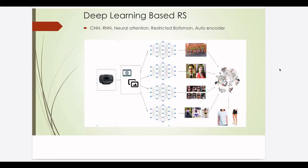In the previous slide, we saw how multi-layer perceptrons can be used as recommendation systems. Just like multi-layer perceptrons, bigger deep learning models like CNNs, RNNs, attention models, restricted Boltzmann machines, or autoencoders can all be used for deep learning based recommendation systems.